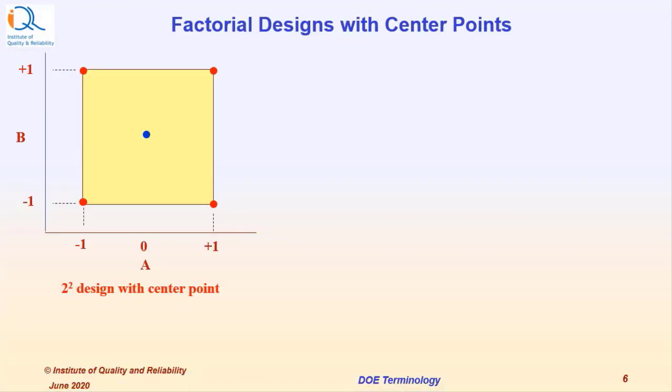The first figure shows a 2 to the power 2 design with a center point, that is two factors A and B, and a blue dot shows the center point in the design.